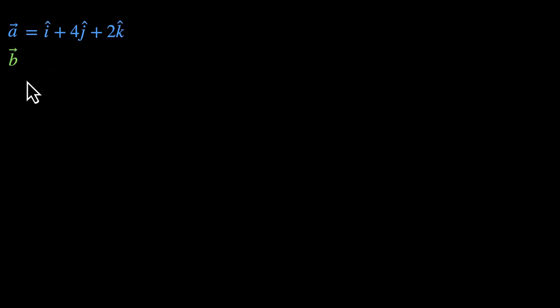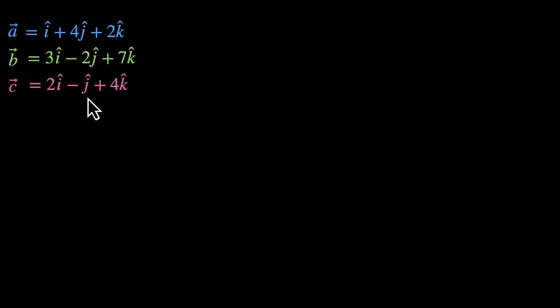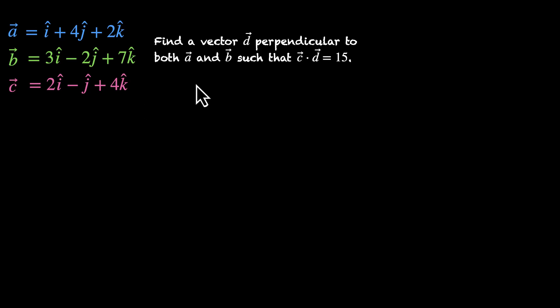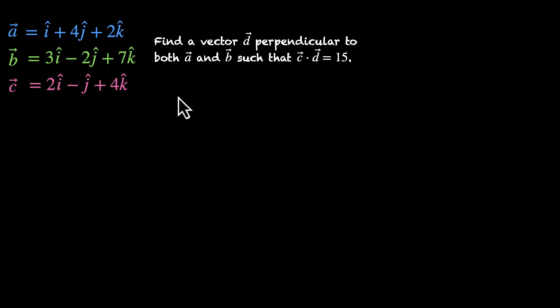One last problem. Vector a is i plus 4j plus 2k, vector b is 3i minus 2j plus 7k, and vector c is 2i minus j plus 4k. We need to find a vector d perpendicular to both a and b such that c dot d equals 15. This involves a few more steps, so pause the video and try this on your own.